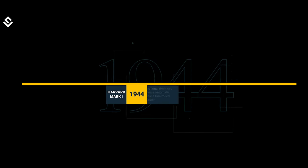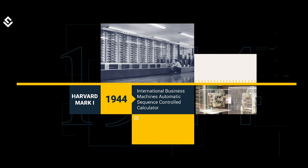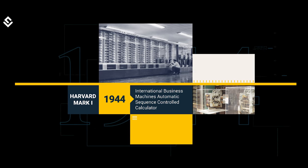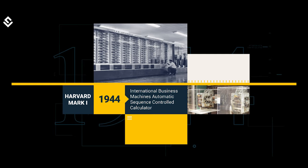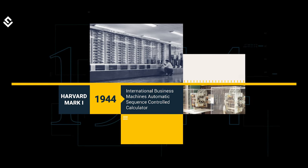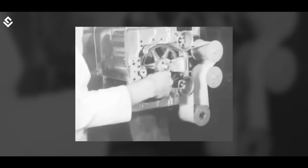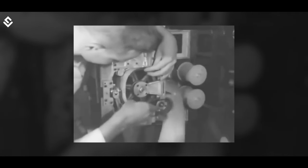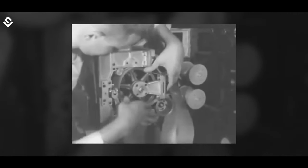This company played the most significant role in the evolution of computer systems. IBM produced the Automatic Sequence Control Calculator, or Harvard Mark I, in 1944, and it was the very first information processing machine. It contained 765,000 wheels, 500 miles of wire, and a panel 51 feet long and 8 feet high.